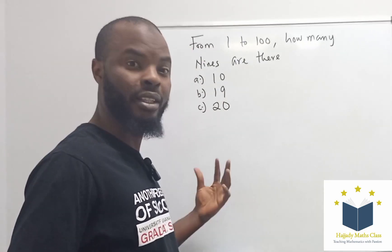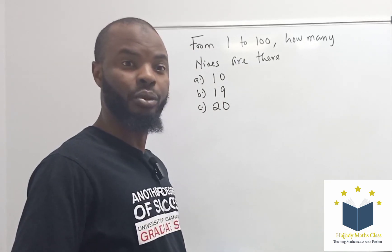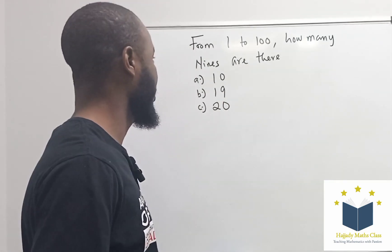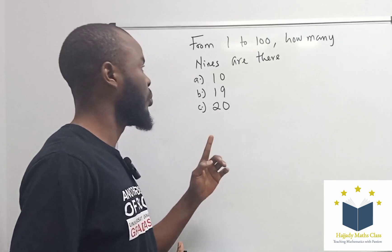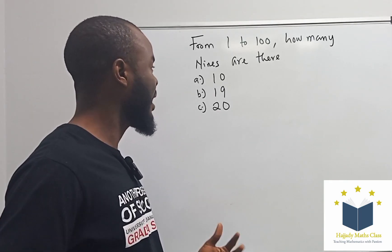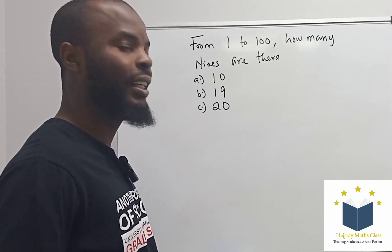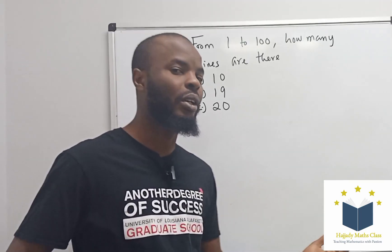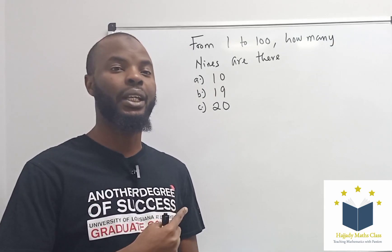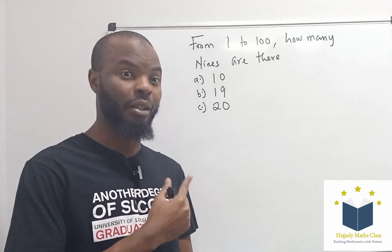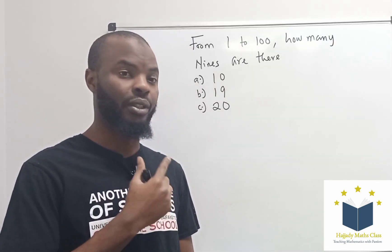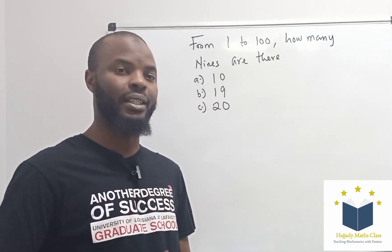Hello, I have this very simple math for you. Now look at the question. It says, from 1 to 100, how many 9s are there? Look at options. We have option A, which is 10, option B, which is 19, and option C, which is 20.